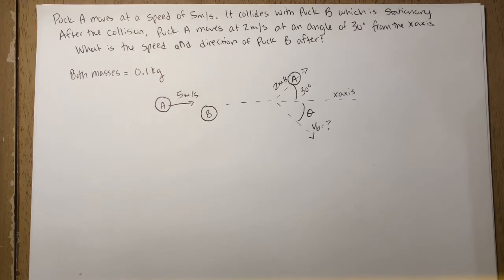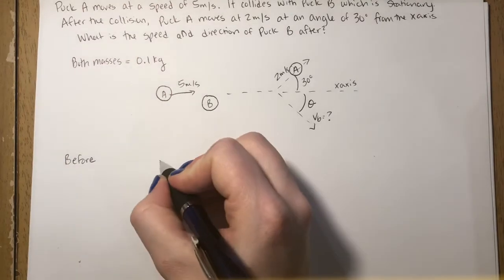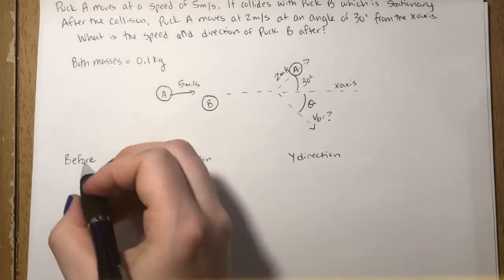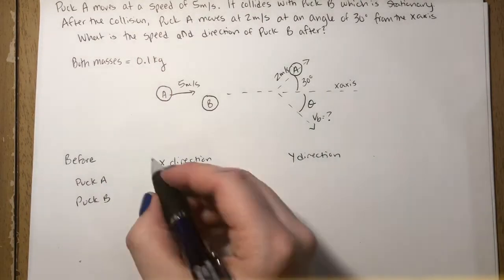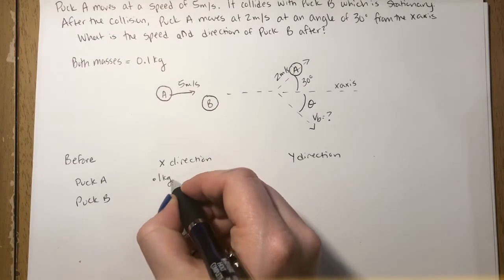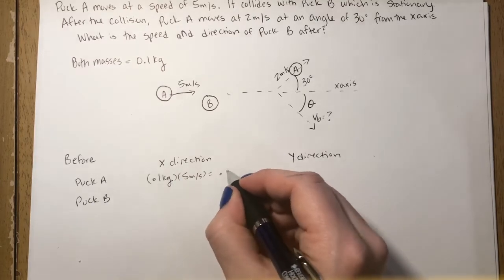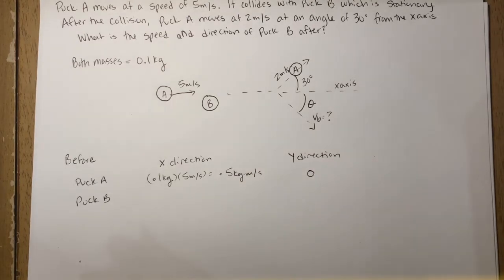Our first calculations are going to be to write out the momentum equation before and after the collision. We are going to separate the x and the y directions before and after the collision and separate both puck A and puck B. Puck A, before it collides, is traveling in the x direction. We know its mass is 0.1 kilograms and the velocity is 5 meters per second, so multiply those together, you get 0.5 kilograms meters per second. It is 0 for the y direction because it's traveling in the x direction. And puck B is stationary, so that makes it easy.